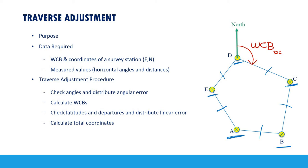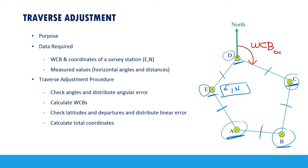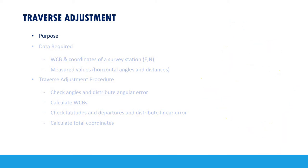The aim of traverse is to calculate the coordinates — easting and northing — of all of these stations. So we need to calculate easting and northing of E, D, C, B, and A. If we know these coordinates, we can do some detailing to produce a plan for this area, or we can set out any structure, building, or road.